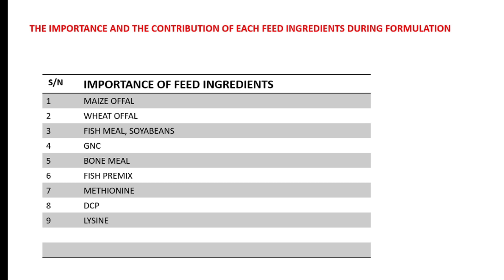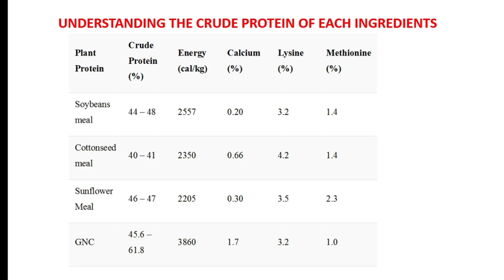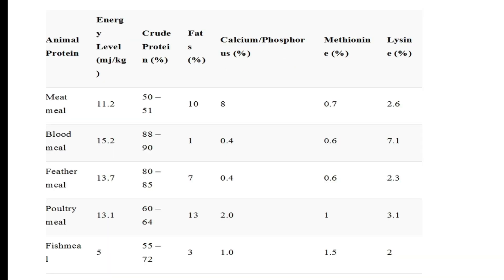The next thing is understanding the crude protein of these ingredients. As established earlier, these crude protein values are already determined from proximate analysis in the laboratory, so you don't need to source them yourself. Here are some of the crude protein values of ingredients we will use in formulation — looking at the plant protein sources: soybean meal, cotton seed meal, sunflower meal, and groundnut cake, each with their crude protein, energy, calcium, lysine, and methionine content.